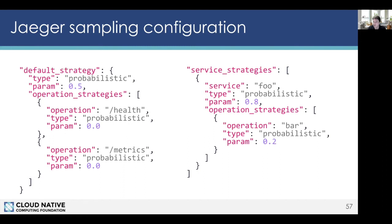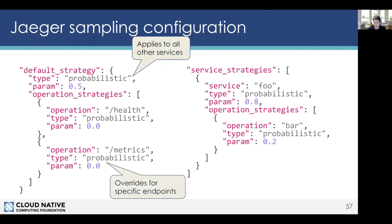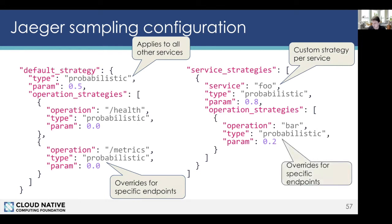Here's an example of that sampling configuration. On the top left is a default sampling strategy applying to any service unless otherwise configured — here using probabilistic sampling with 50% probability. You can also provide overrides for specific operations, such as giving 0% probability to health or metrics endpoints. On the right side are per-service overrides — for example, giving a low-QPS service a higher sampling probability, while also being able to override individual operations on that service.